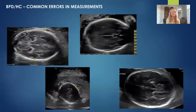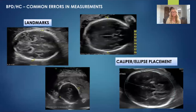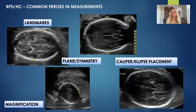We receive a lot of referrals for follow-up growth concerning SGA and IUGR fetuses in our facility, and we frequently assess prior outside imaging for accuracy. We've noted many different variations leading to inaccuracy in calculations. These include not having all landmarks present, caliper and ellipse placement just slightly off, plane and symmetry issues, and a big one — magnification. This is the most common one that we see. If you're not magnifying your image enough, it's very difficult to see your landmarks, and this can lead to inaccuracy in caliper placements and inaccuracies in your overall measurements.